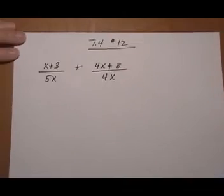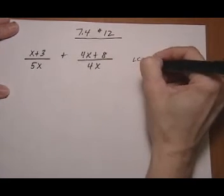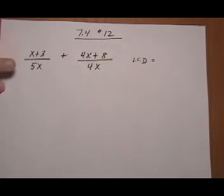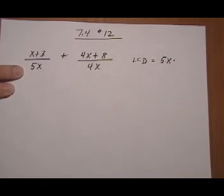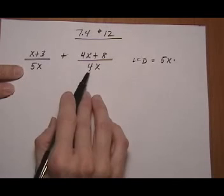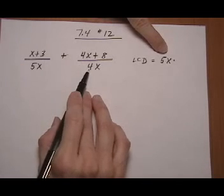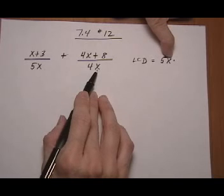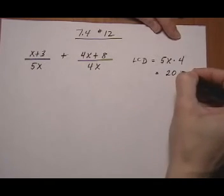And let's look at number twelve. Again, we have different denominators, so our first step is going to be to figure out the LCD. And to build the LCD, remember from section 7.3. First we take the entire first denominator, and we're going to multiply that by anything in the next denominator that is not already over here. So the next denominator has a four and an x. Well, the x is already there, but the four isn't. So we're going to put the four there.